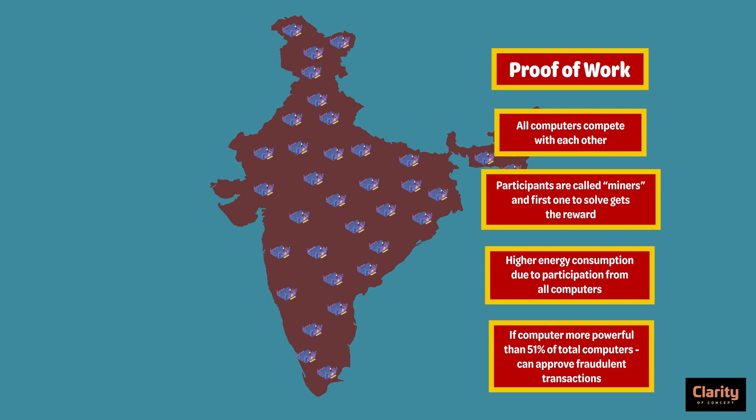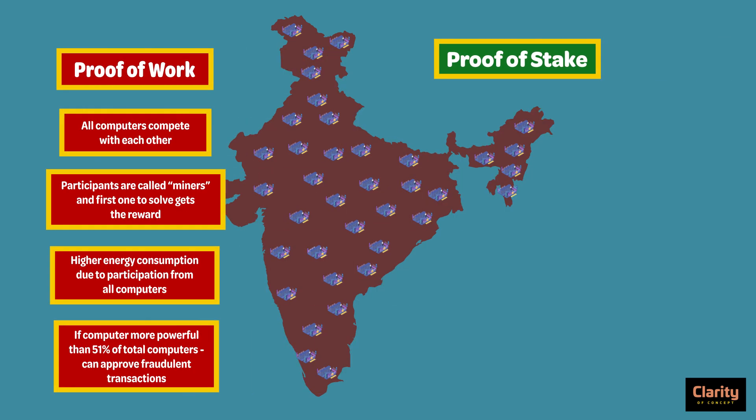You might say it is not likely for one computer to be that powerful. But these people combine with each other and form groups called mining pools. Thus, they can exceed 51% capacity and approve fraudulent transactions. To fix all these issues, a new method was invented called proof of stake.